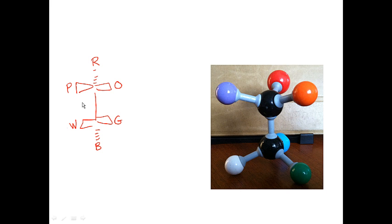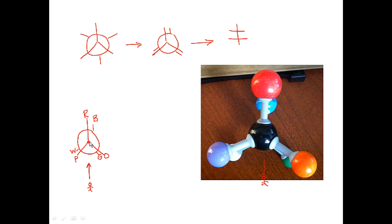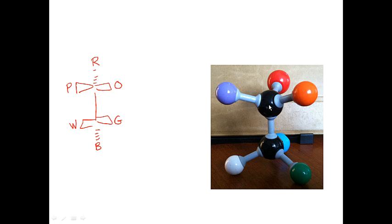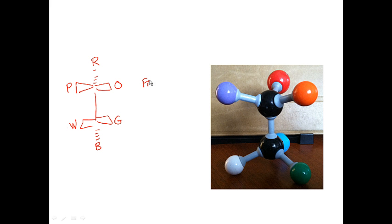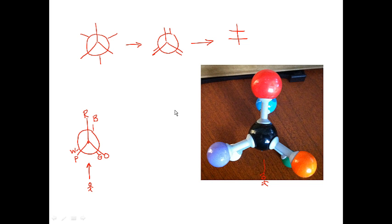In order to convert the Newman projection into the Fischer projection, we take this molecule and rotate it 90 degrees to give us the Fischer projection. Notice that the group with the purple, red, and orange is pointing towards you — that's the front carbon, which becomes the top carbon in the Fischer projection. The bottom carbon in the Fischer projection was the back carbon; the green, white, and blue groups were away from us on the back carbon.